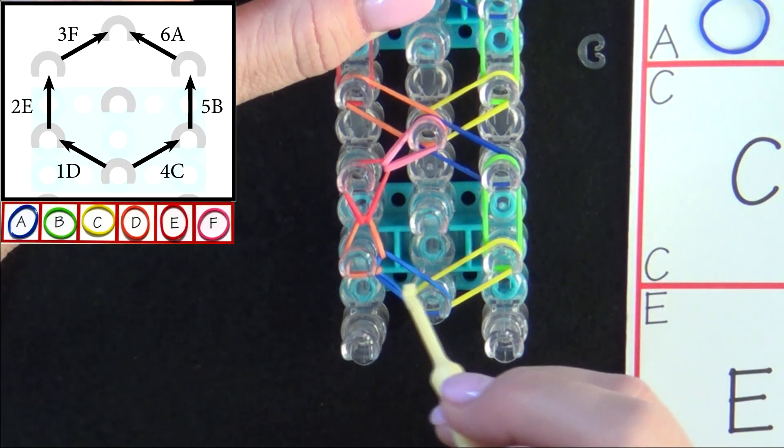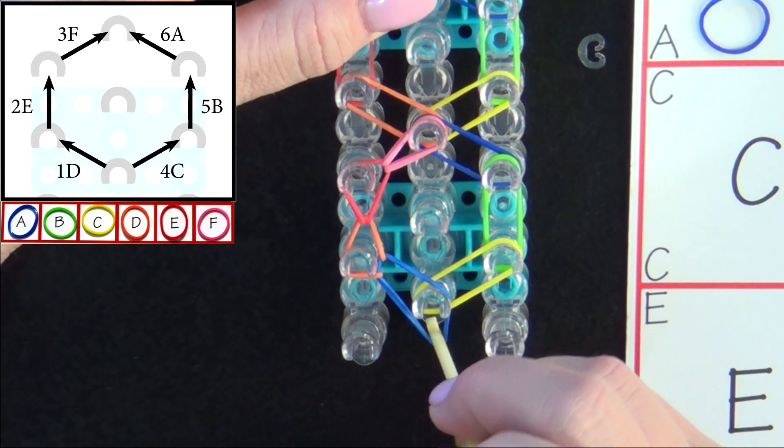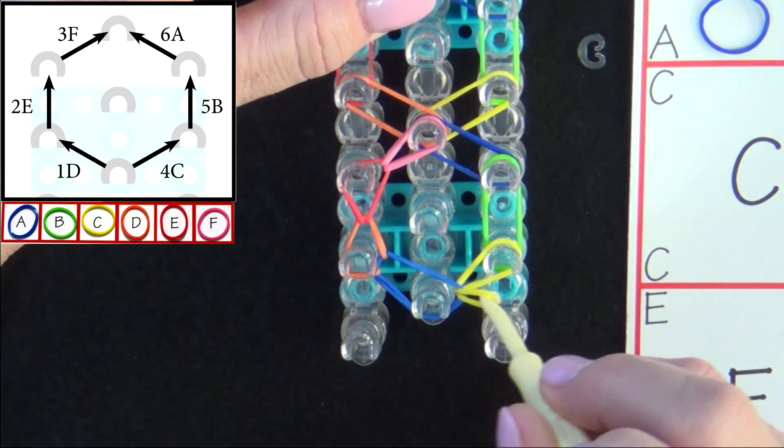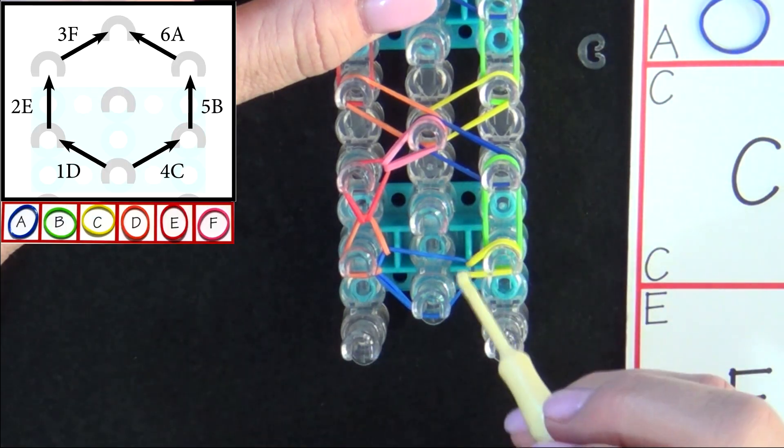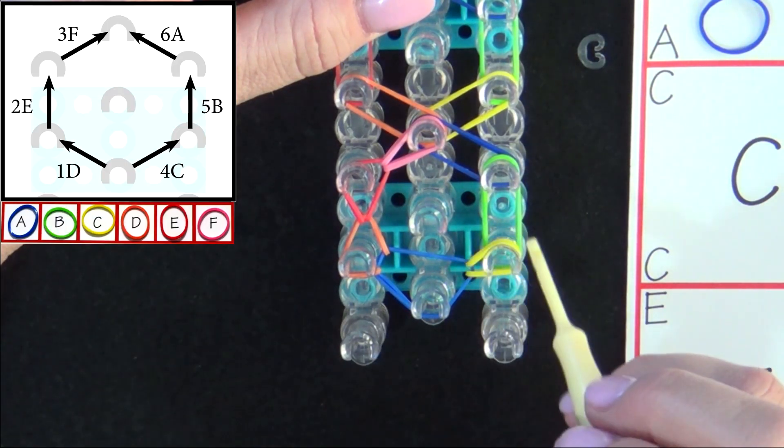We'll loop band 4C. You can reach in the side, swing it around, grab that band and pull it out to the right. Again, notice that teardrop shape.